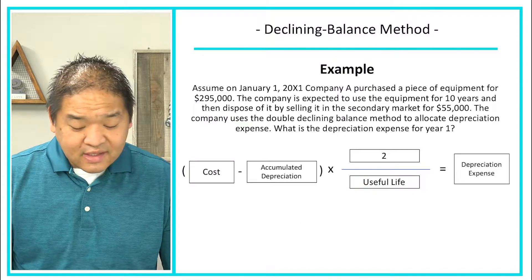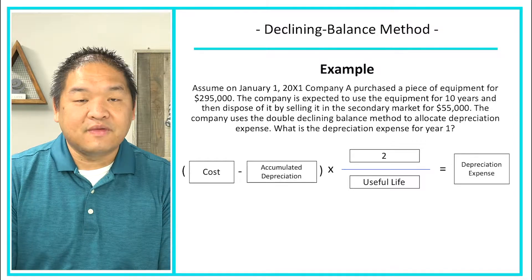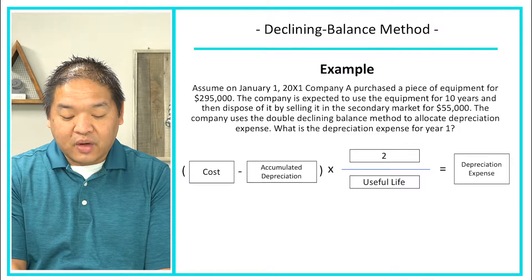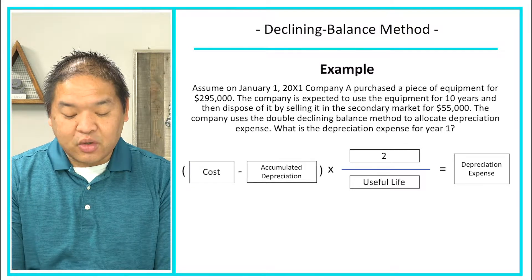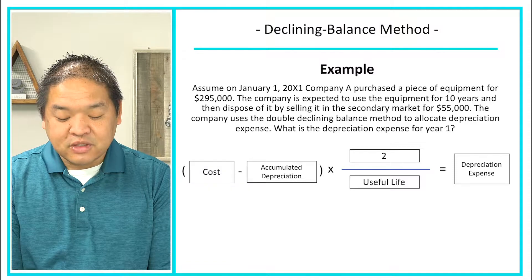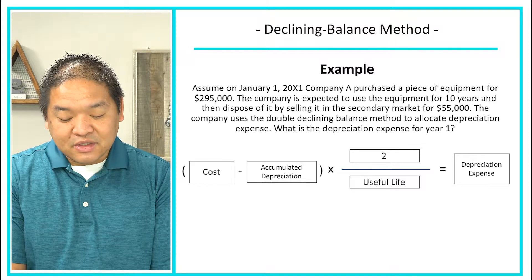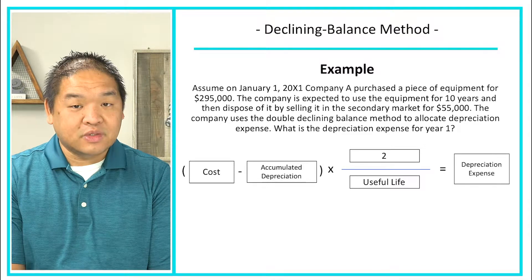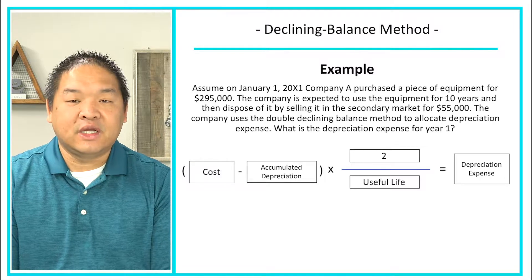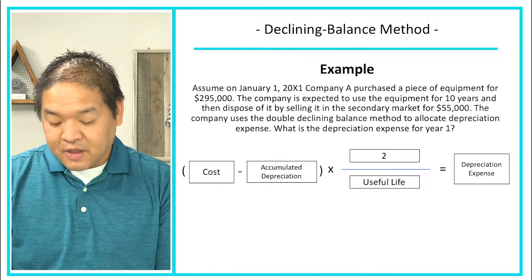Let's look at an example. On January 1, 20X1, Company A purchased a piece of equipment for $295,000. The company expects to use the equipment for 10 years and then sell it in the secondary market for $55,000. The company uses the double declining balance method — meaning 200%, or double the straight-line rate — to allocate depreciation expense. If you hear 'double,' that means 200 percent.